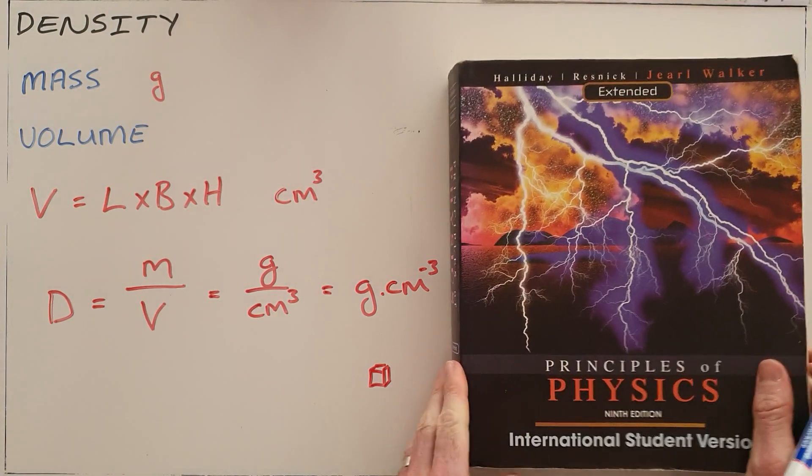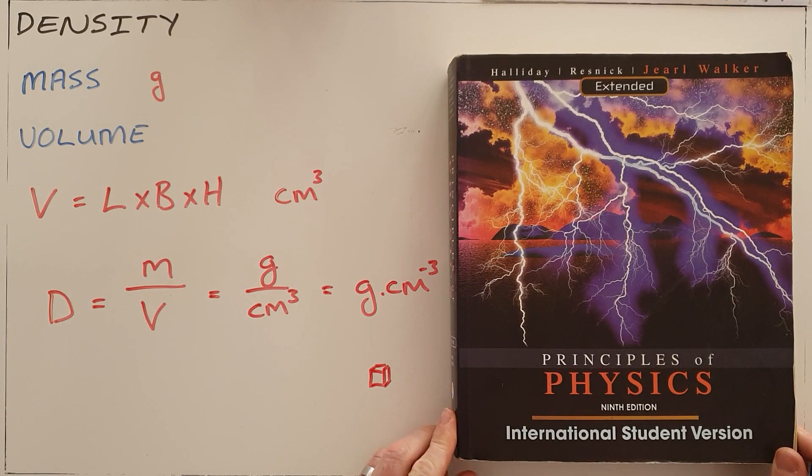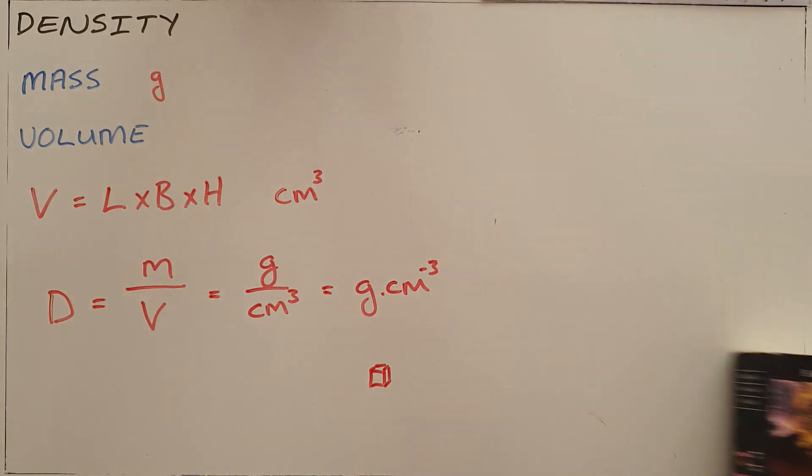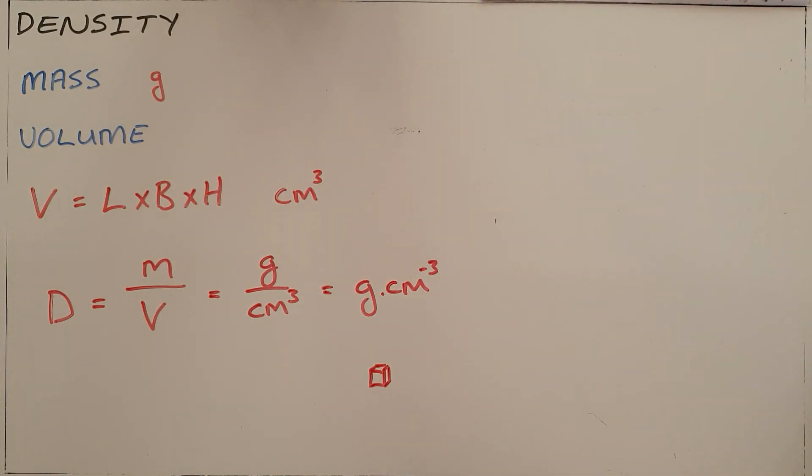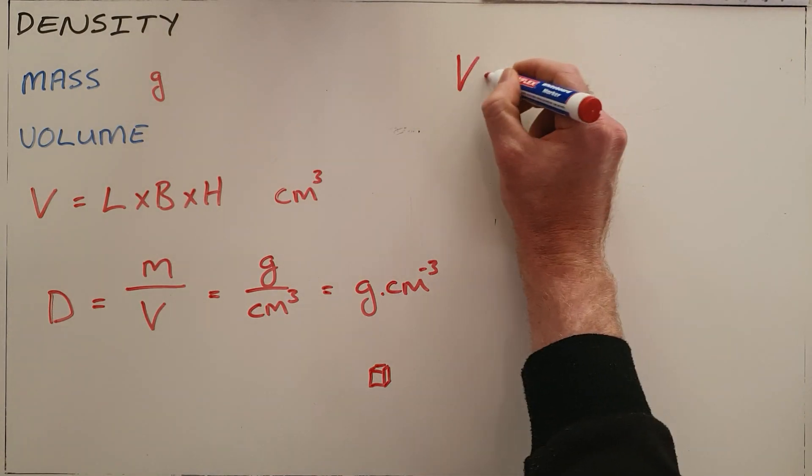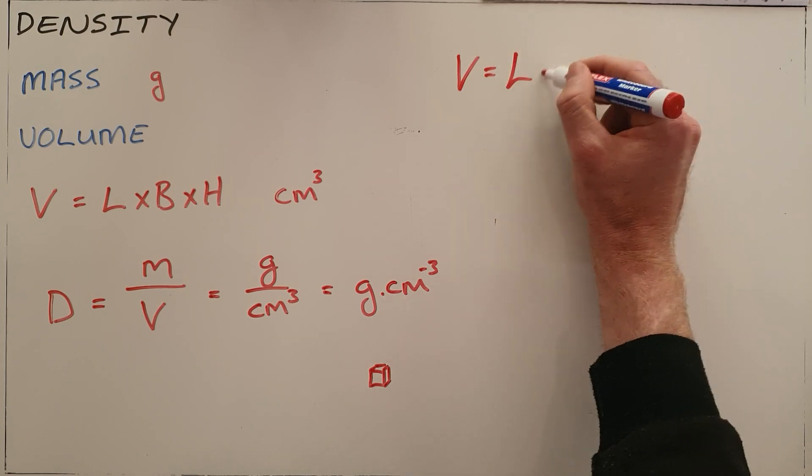We've got a physics textbook, and I have measured the height, length, and width of this textbook. We found that this textbook has a volume which is calculated by multiplying length times breadth times height, which is measured with a ruler.